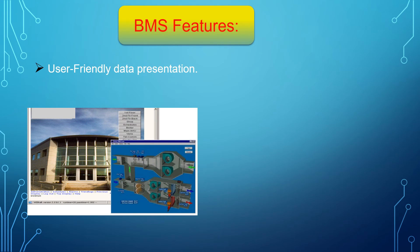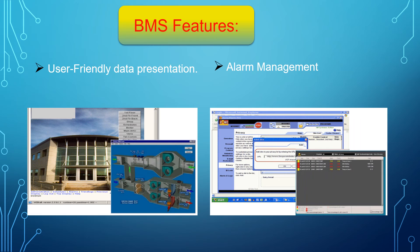For user-friendly data presentation, BMS coordinates the flow of information through the system by implementing customized graphics, floor plans of buildings, and graphical representations of equipment. In alarm management, the system presents alarms in sequence of importance and time for potentially dangerous situations, guiding the operator to take appropriate action through audio and visual indications, emails, SMS, alarm summaries with time, date, priority, and description.